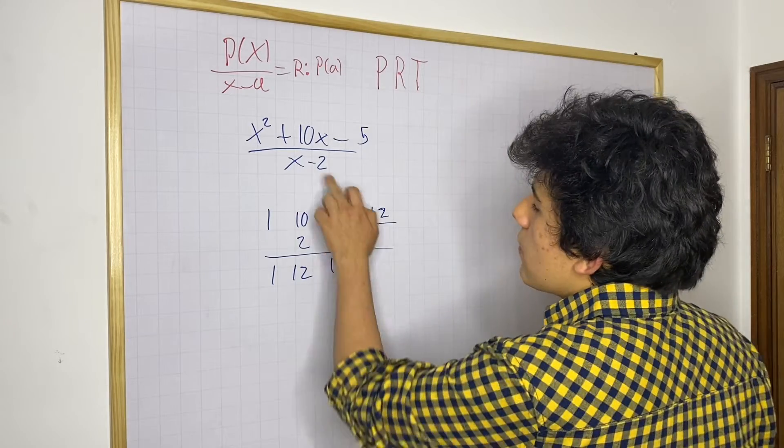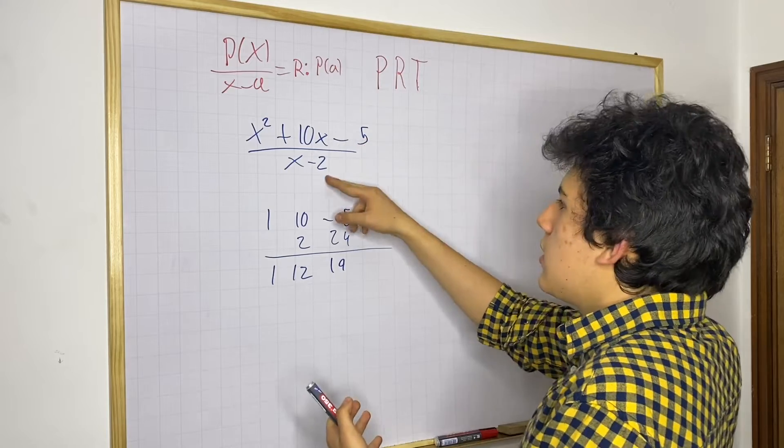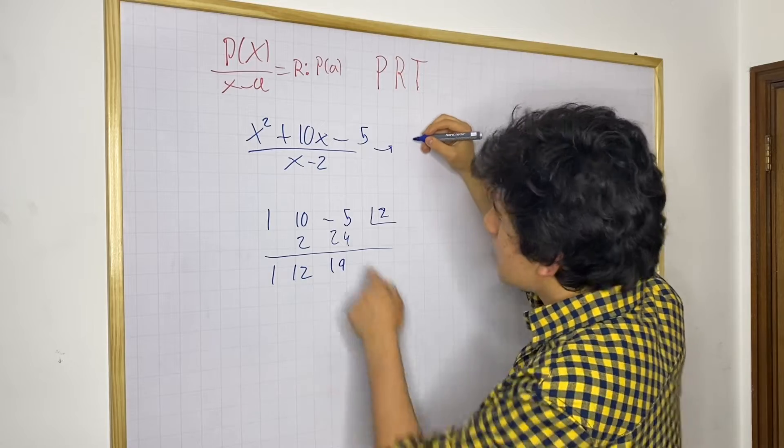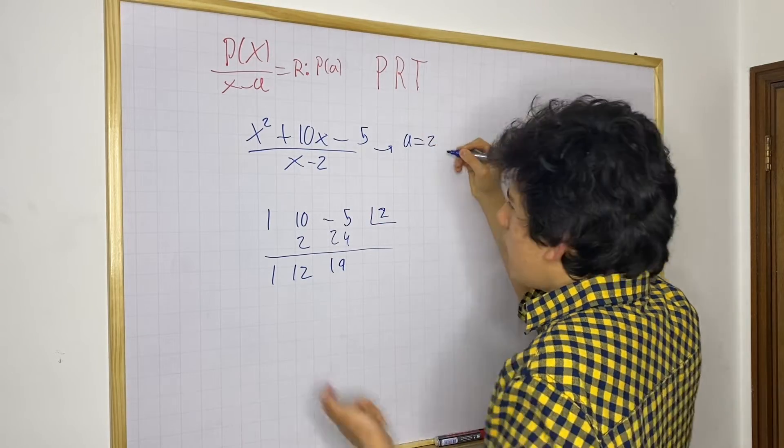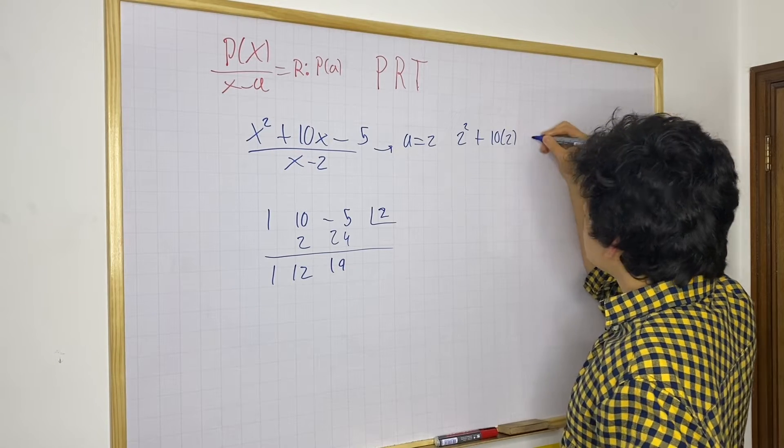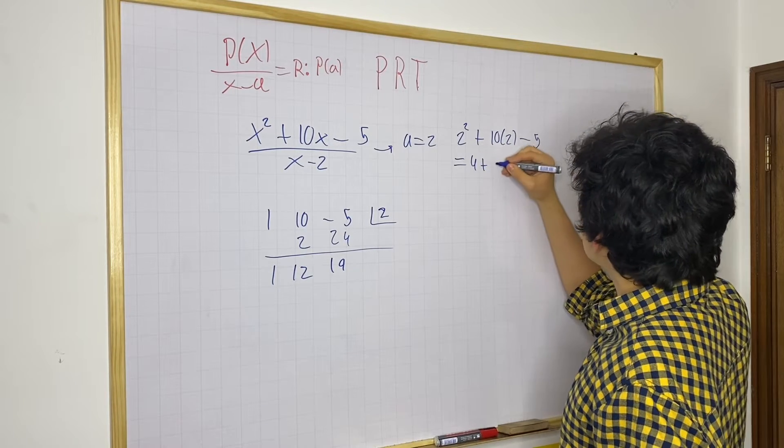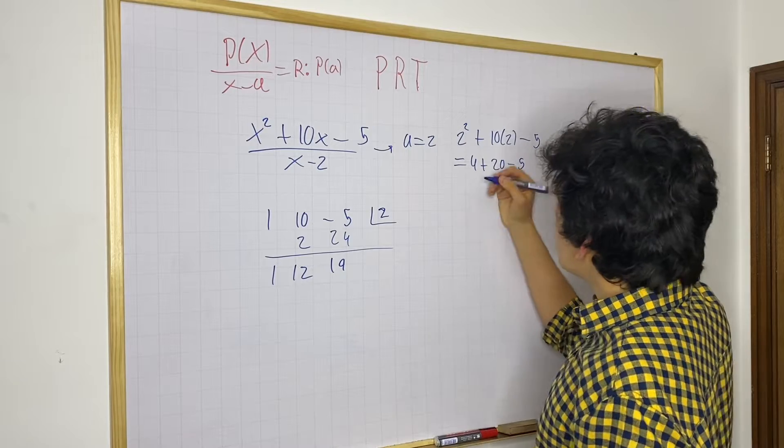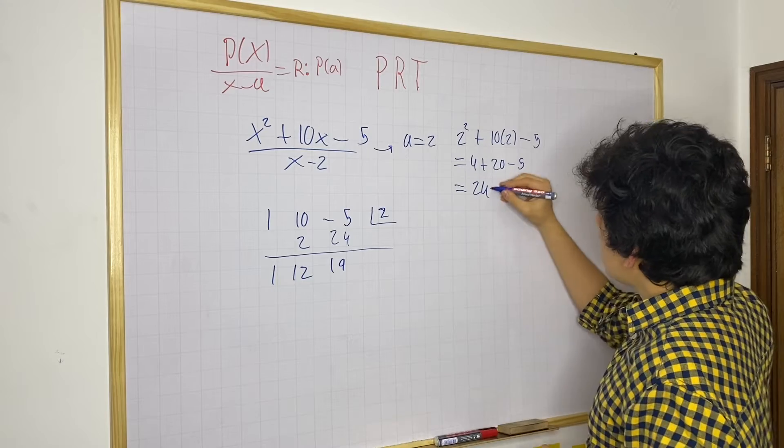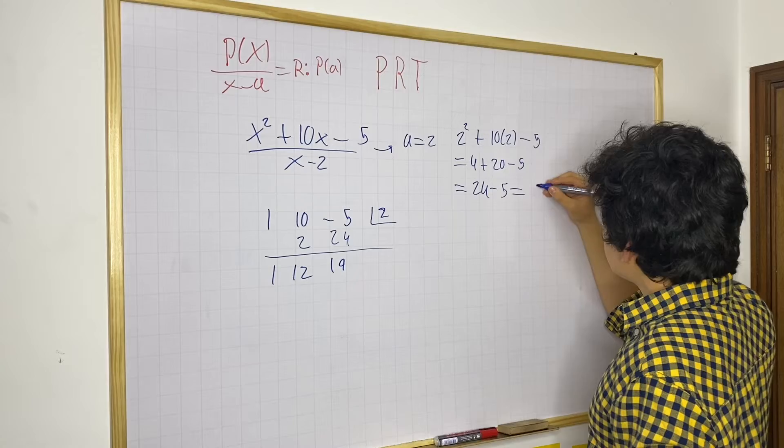Now let's see if that is true. If we evaluate the function at p of 2, well, let's see what we get. So if we say that a is equal to 2, then we have 2 squared plus 10 times 2 minus 5. And all of this should be equal to 4 plus 20 minus 5. And that's just going to be equal to, yes indeed, 24 minus 5, which is exactly the operation that we had there. And this is 19.